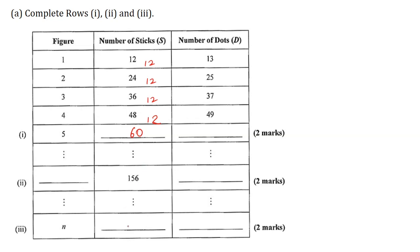Now I will derive a formula for the number of sticks. Notice here that 1 multiplied by 12 is 12. 2 multiplied by 12 is 24. 3 multiplied by 12 is 36. 4 multiplied by 12 is 48. 5 multiplied by 12 is 60. So therefore n multiplied by 12 is 12n. And this is the formula for the number of sticks.